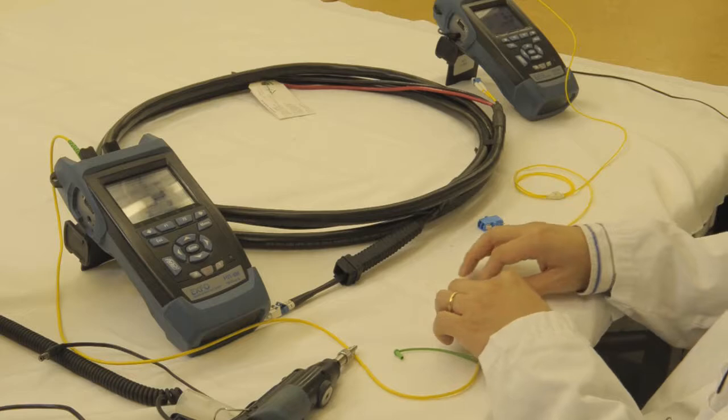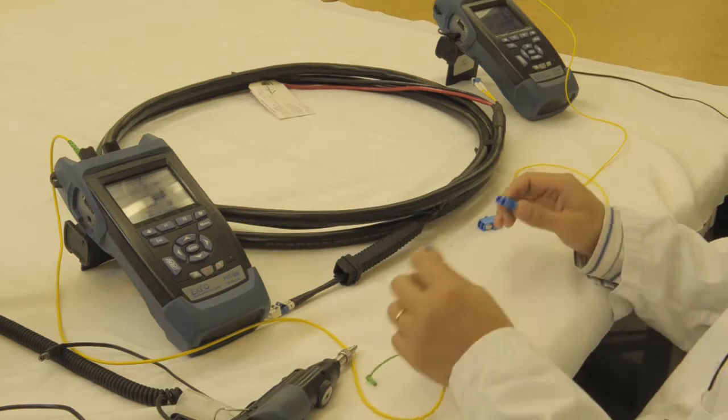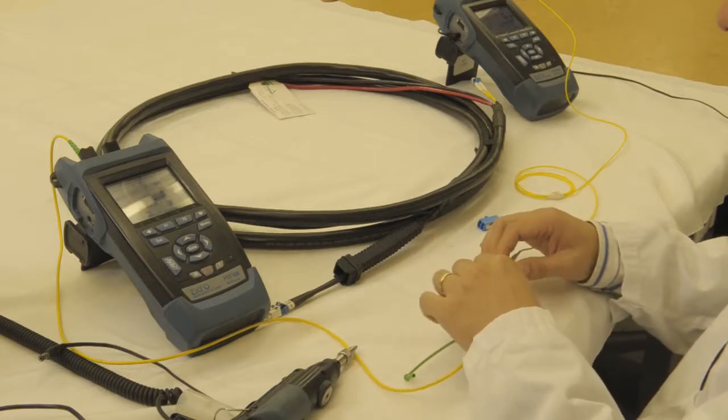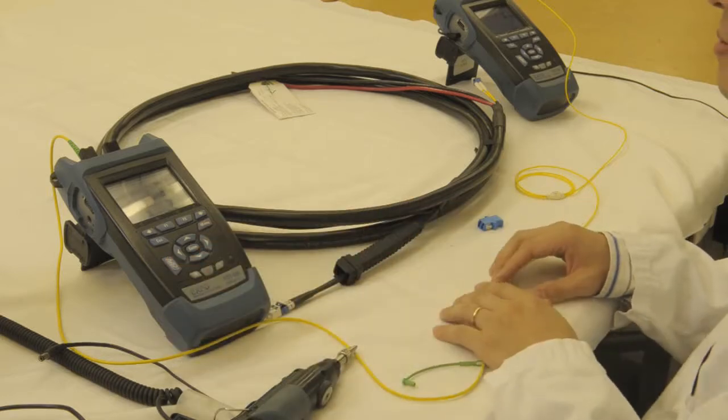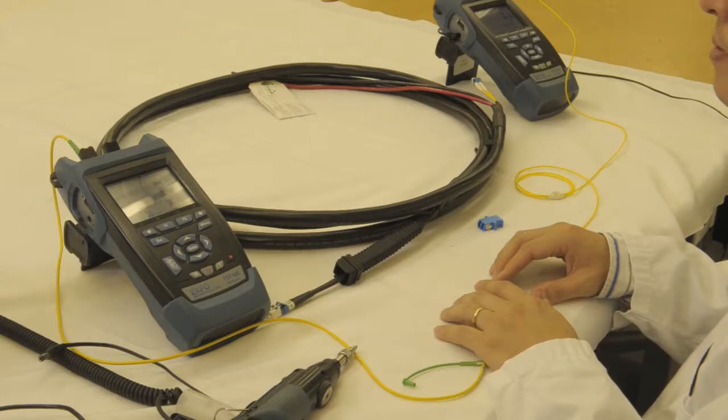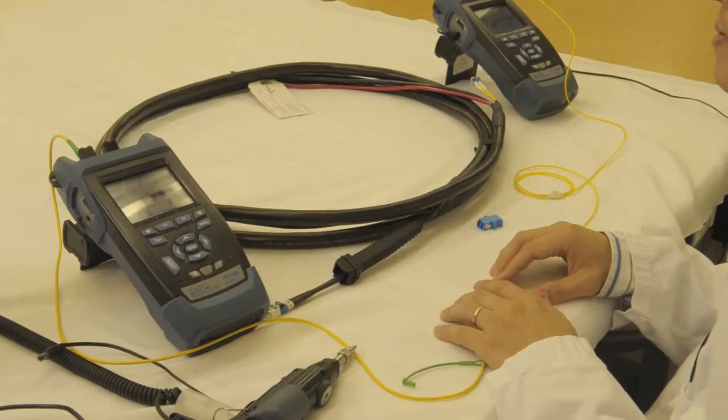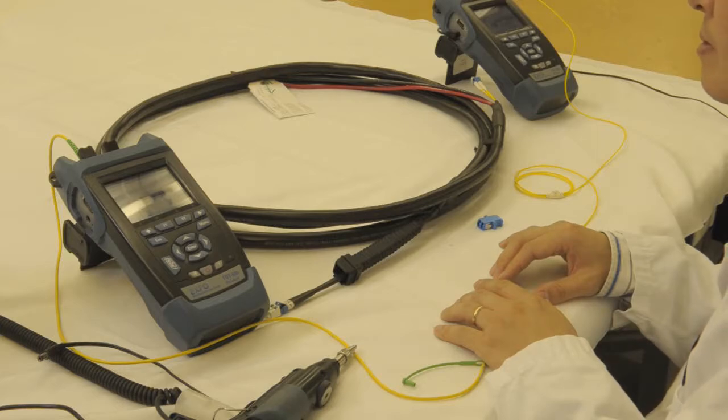Now what we want to do next is make sure that our reference cables are close or at zero, so we're going to go ahead and test our reference cables. The results: A to B at 1310 is 0.00, B to A is 0.00. For 1550 we're at 0.01 and 0.00. Very good, we're all set to go.